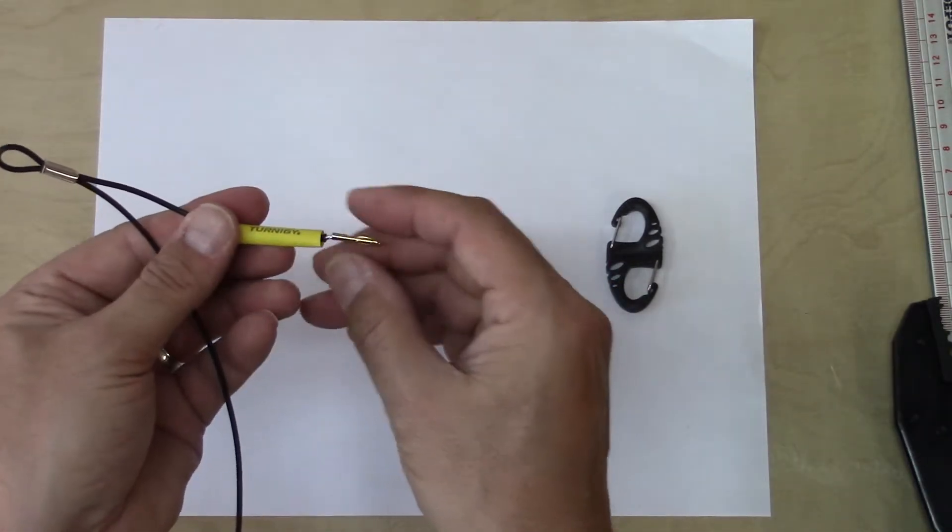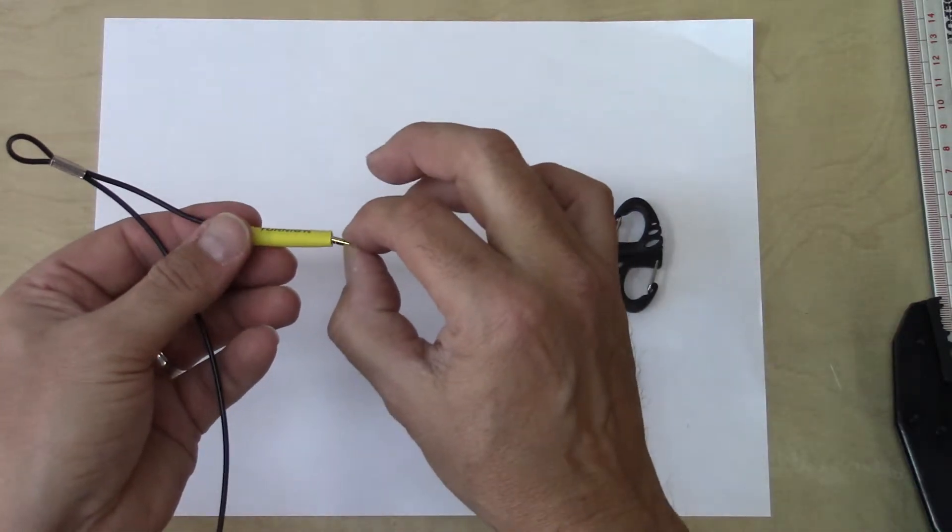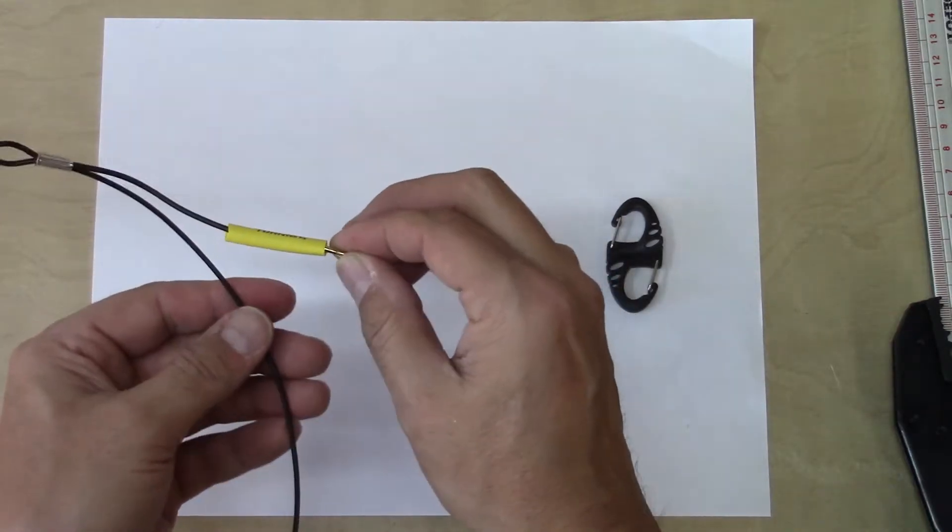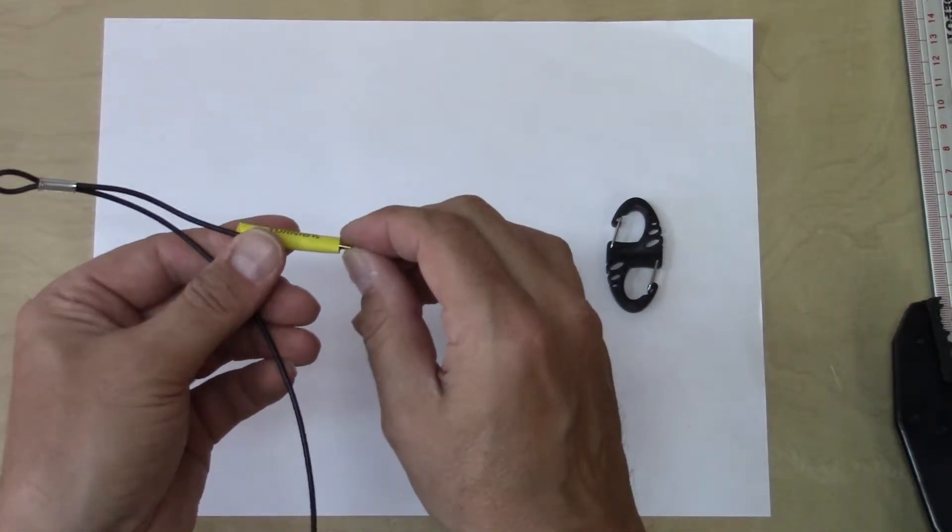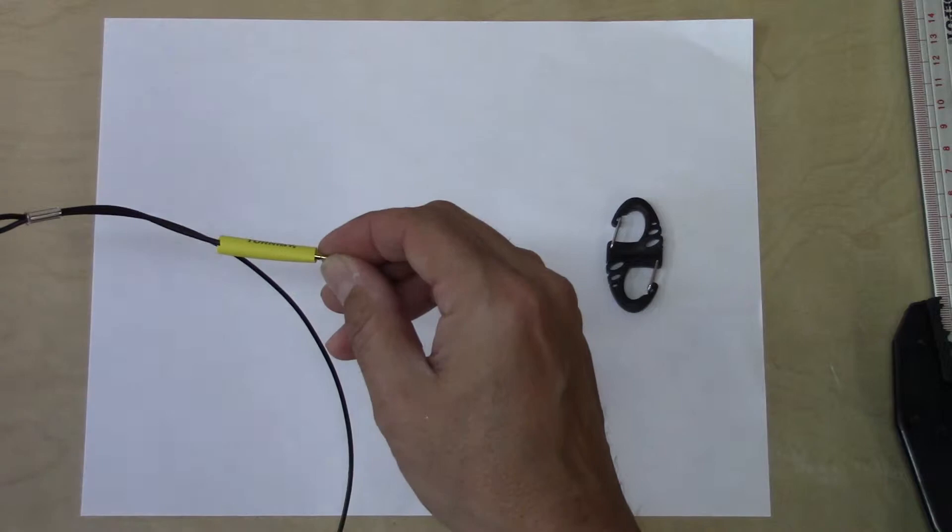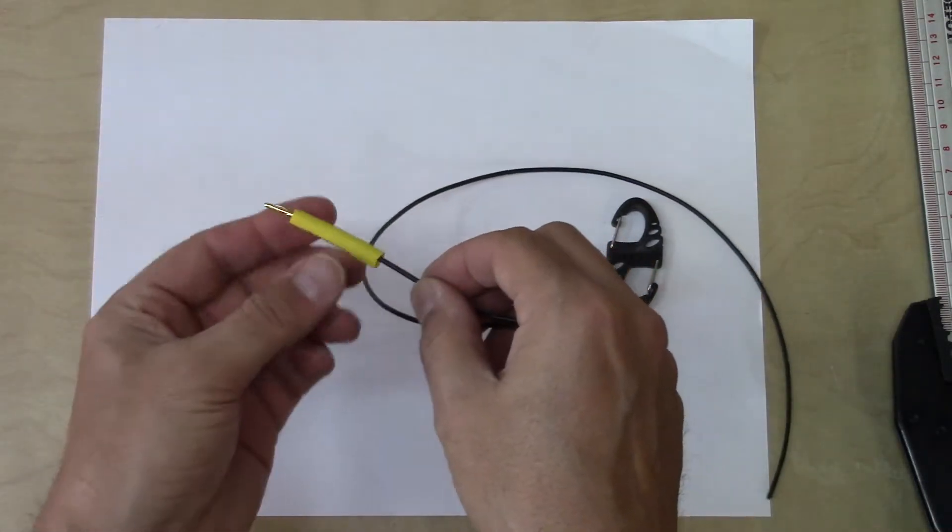So we'll take the heat shrink, we'll put it over the wire and the connector, covering up the bottom quarter of an inch of the banana plug, but making sure that we leave the banana plug exposed so we don't get in the way of the connector. Now we're going to use our heat gun to shrink that heat shrink around the banana connector.